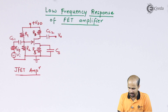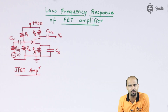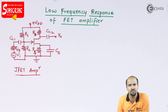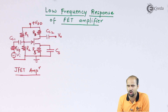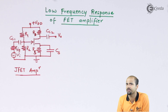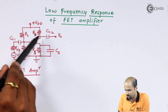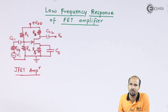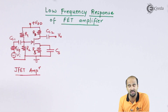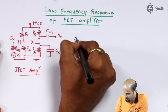Before applying the low frequency response analysis, we need to find the value of the lower cutoff frequency. Once we get the lower cutoff frequency, we will be able to draw the frequency response of the FET amplifier. First of all, we will draw the AC equivalent model for this particular FET amplifier. The symbol shown represents a JFET amplifier, but we can also use D-MOSFET or E-MOSFET — we will still get the same AC equivalent model.